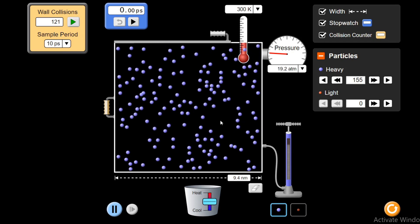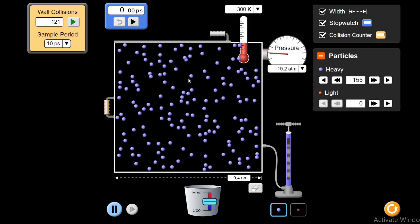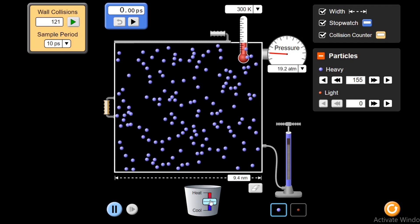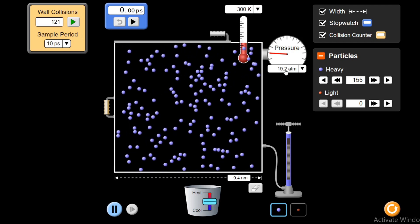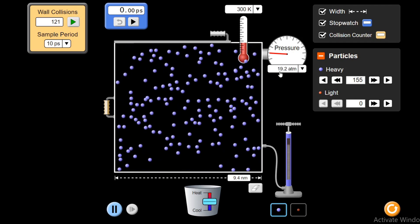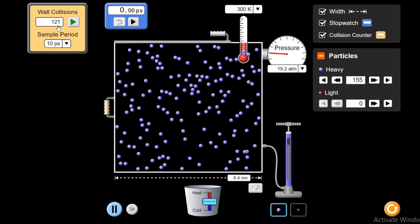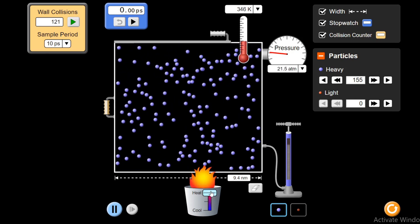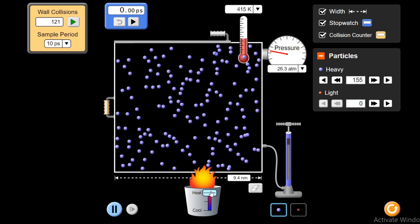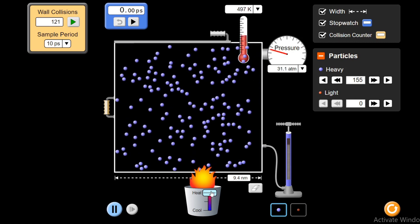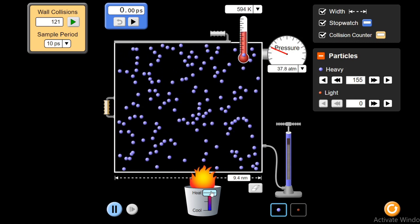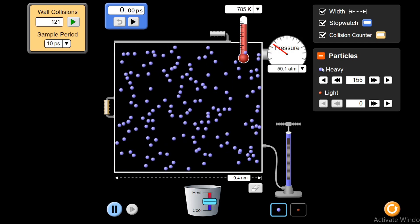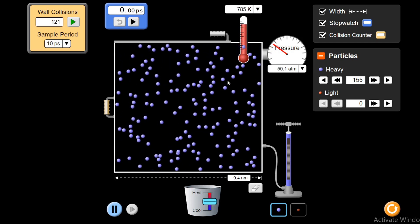As I told you, another way to increase the velocity or the energy of these molecules is by heating this system. Observe that it will increase from 19.2 and the collisions will increase from 121 collisions. Let me heat up the system. You see, the pressure is going up 30, 32, 35, 37 and up to 40, up to 50.1 atmospheric pressure.